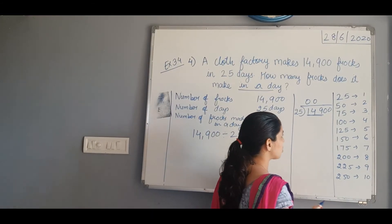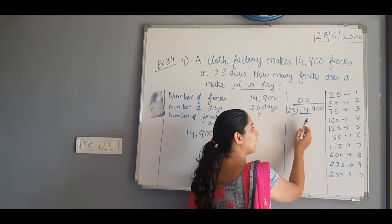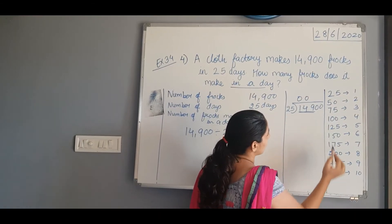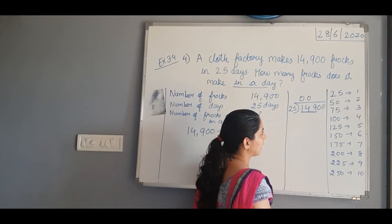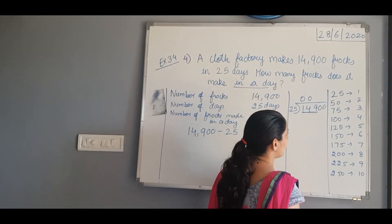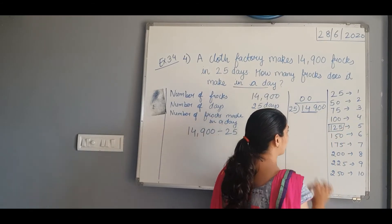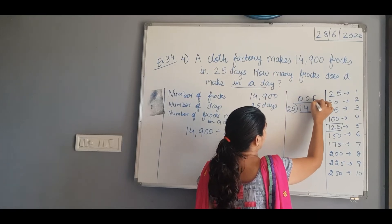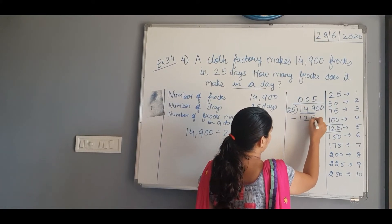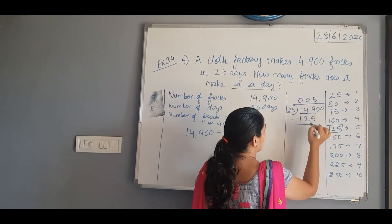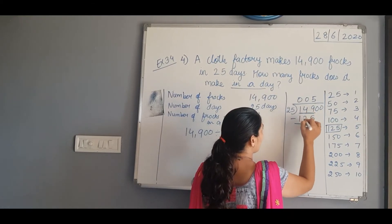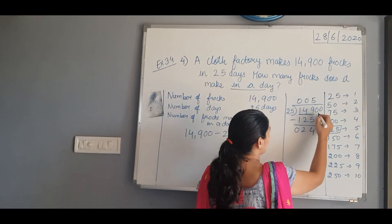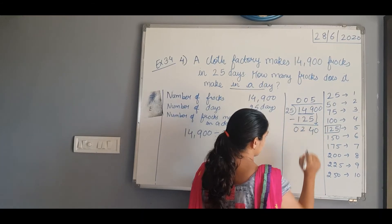We look in the table of 25 for where 149 appears. If it is not there, we take a number which is less than 149. In the table of 25, 149 is not there, so we take 125 which is less than 149. So 25 fives are 125 — we put 5 up and subtract 125. So 9 minus 5 is 4, 4 minus 2 is 2, and 1 minus 1 is 0. Now we bring the next digit down — that is, we bring this 0 down.